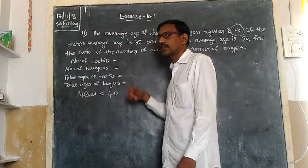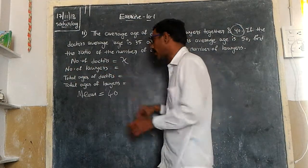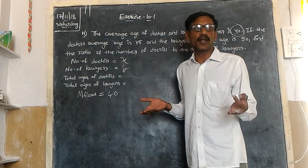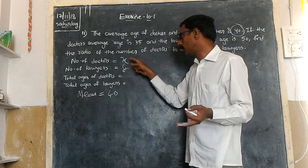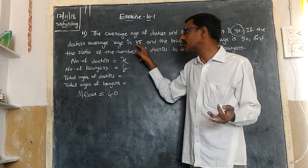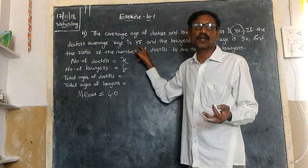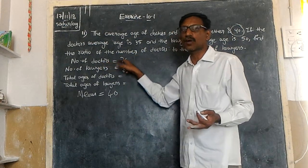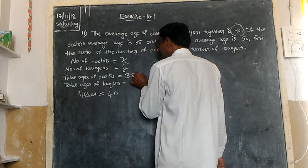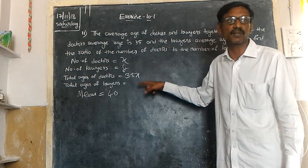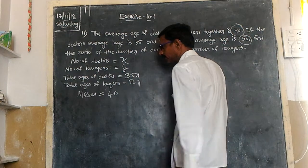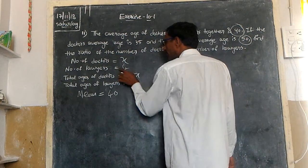Let the number of doctors be x and the number of lawyers be y. So the total age of doctors is x times 35, which equals 35x. Similarly, the total age of lawyers is 50y.